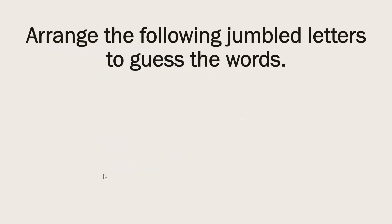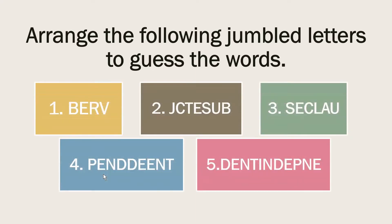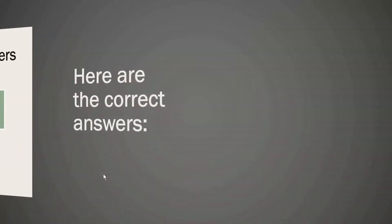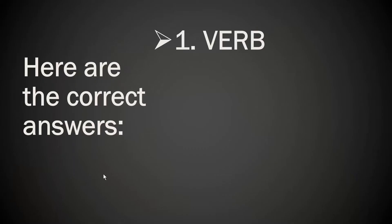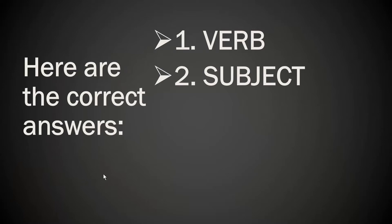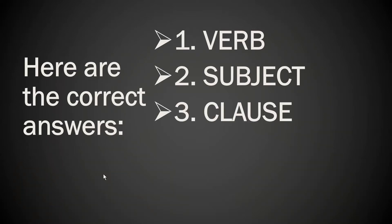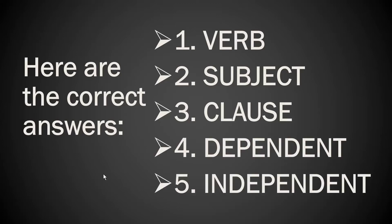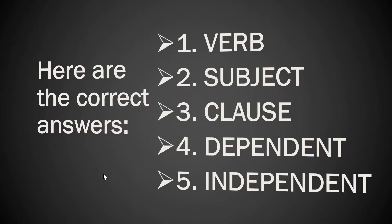Arrange the following jumbled letters to guess the words. Here are the correct answers: 1. Verb, 2. Subject, 3. Clause, 4. Dependent, 5. Independent.